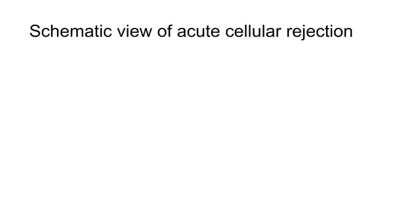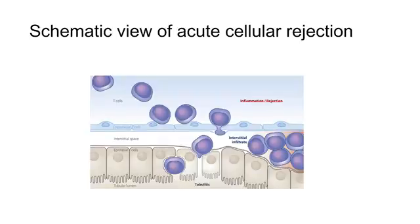We started this lecture with a histological picture of a biopsy with acute cellular rejection. This slide gives the schematic drawing of this situation. As a consequence of the inflammation, T cells that are normally in the bloodstream will be able to go through the endothelial layer and migrate into the tubular interstitial area.